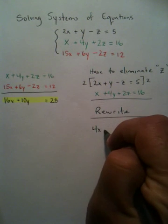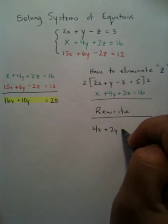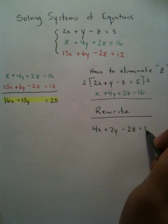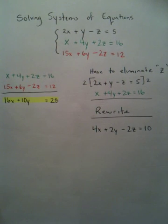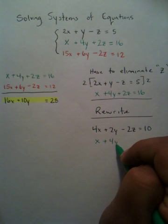I've got 4x plus 2y minus 2z equals 10. The green function didn't have to change, so we leave it exactly the way it was.